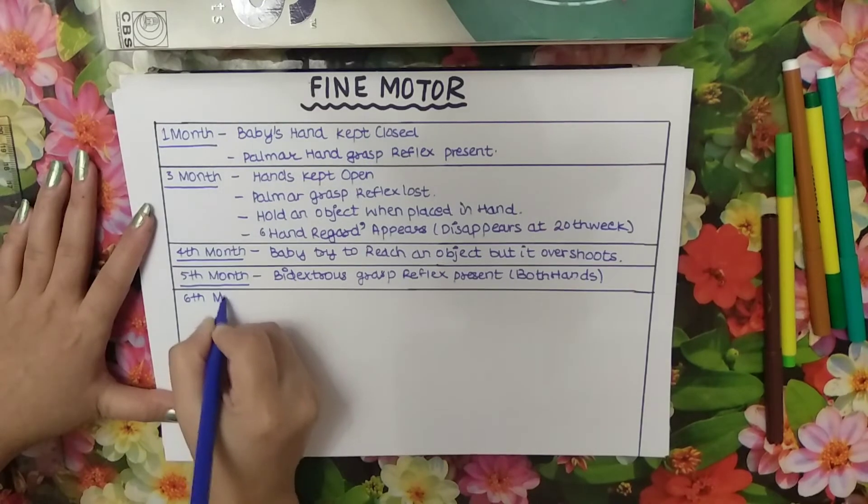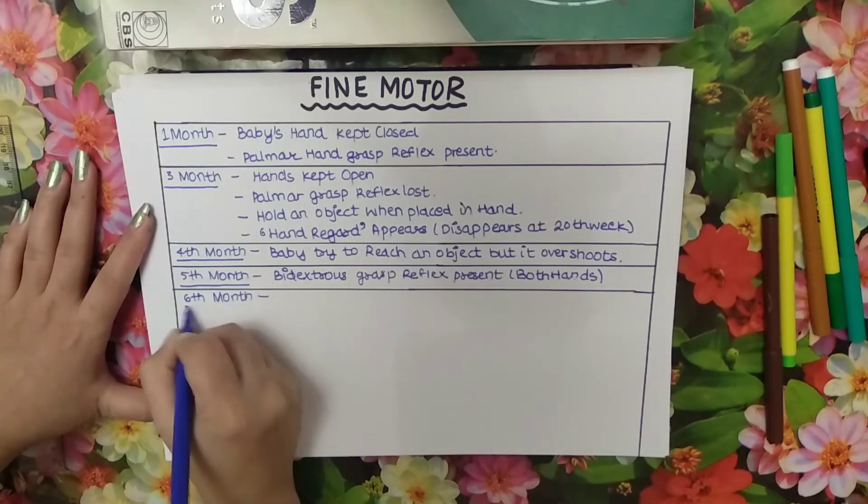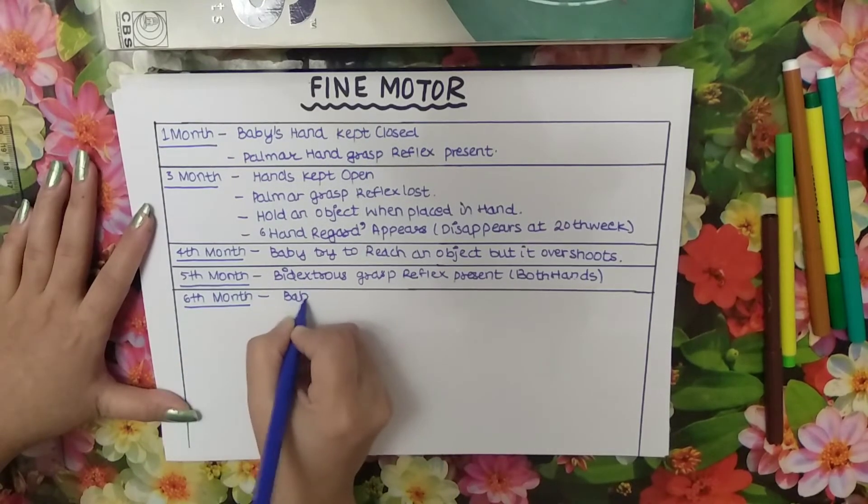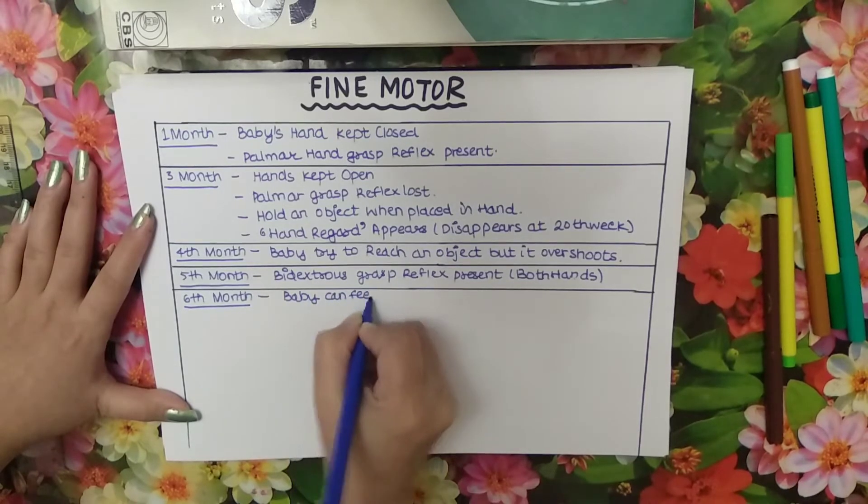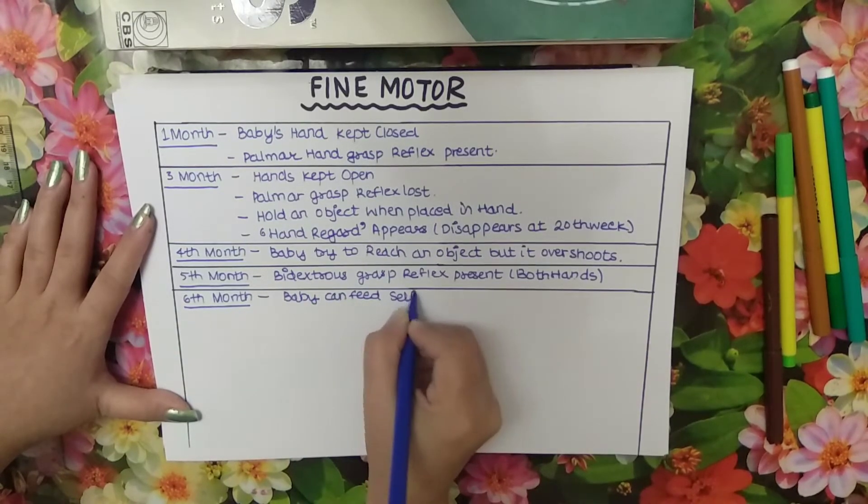In sixth month baby can feed self a biscuit.